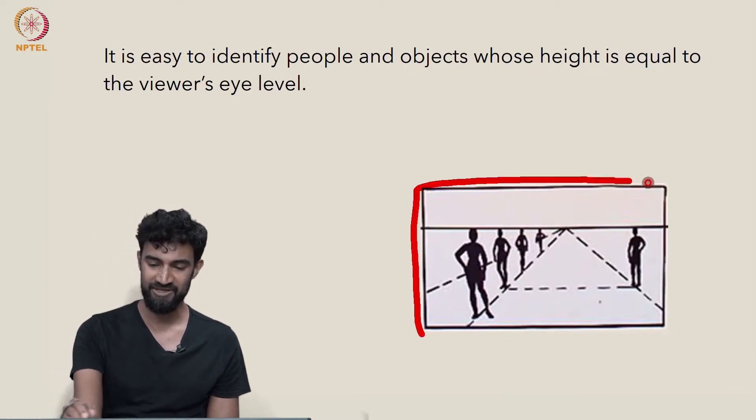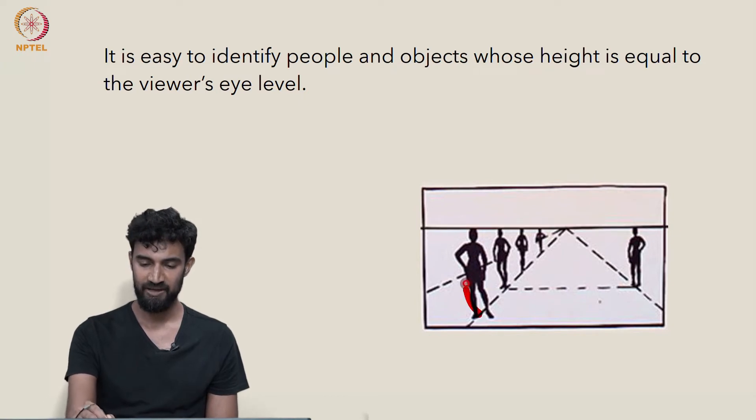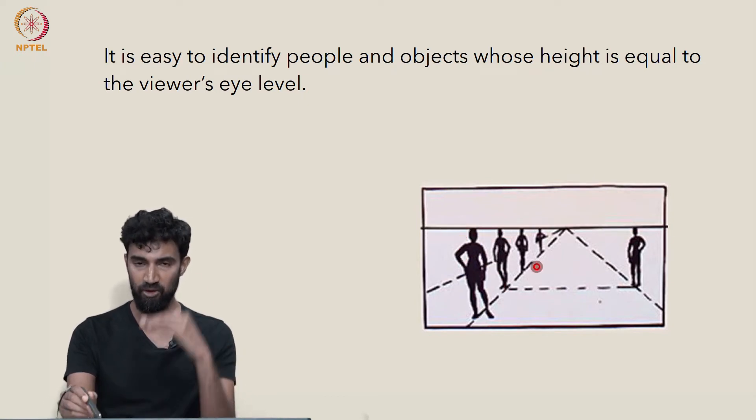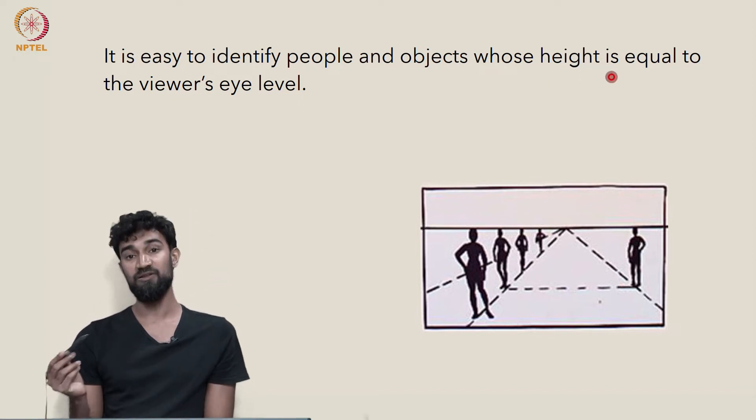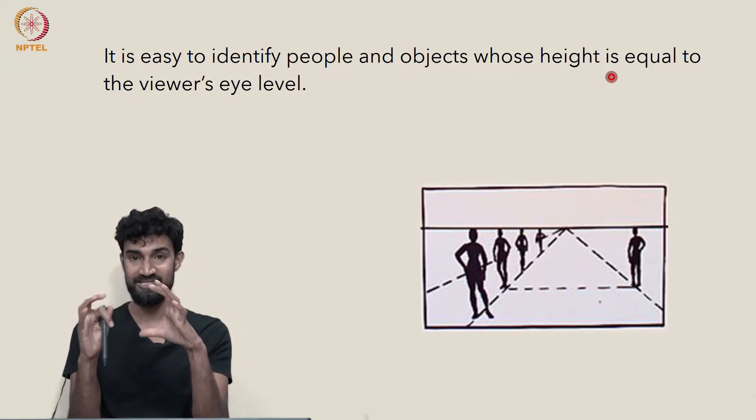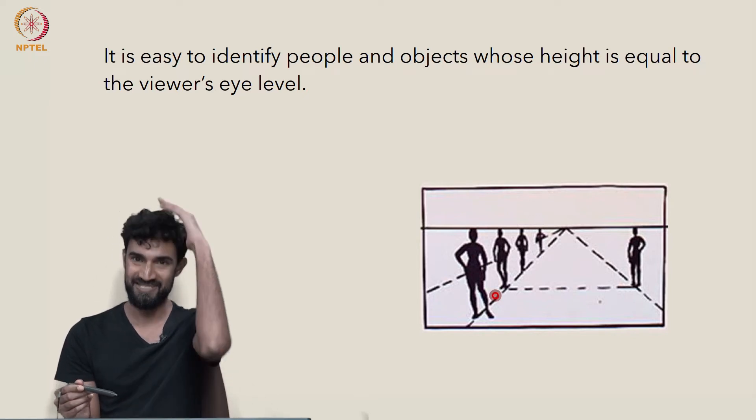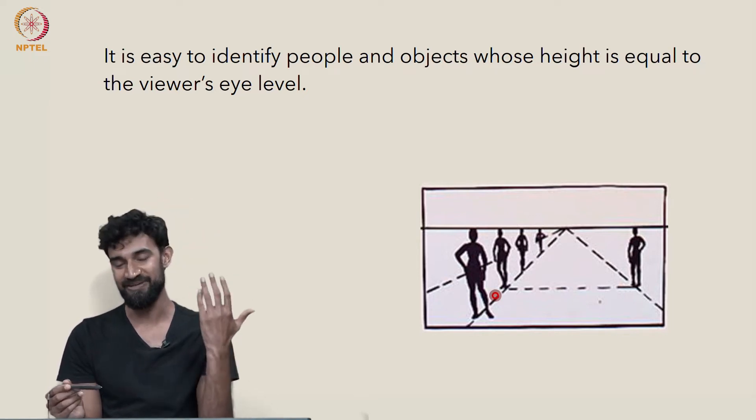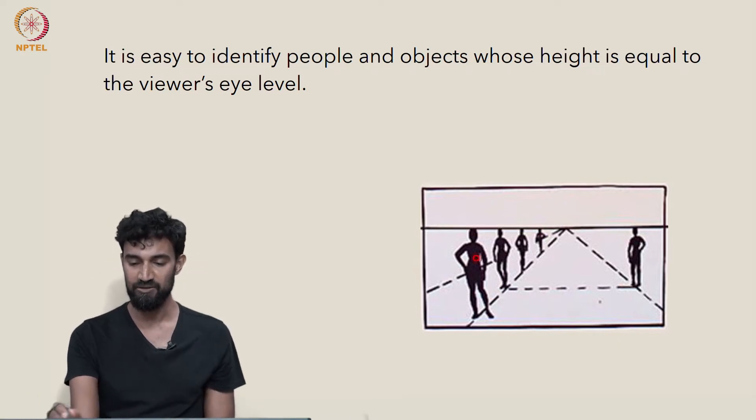So in this image here, what can we say about the heights of the people in this picture? Well, here's the horizon line. All of them, their heads go all the way up, exactly up to the horizon line. So their heights are all equal to the viewer's eye level. If a six foot tall person is viewing this and seeing this scene, and everybody's head is just hitting the horizon, then all those people are a little less than six feet, because the six foot tall person would have an eye level that's maybe five foot nine inches or something. So yeah, but basically you can tell the heights of the people.